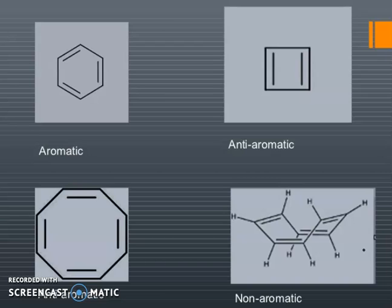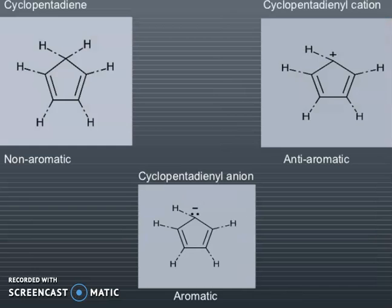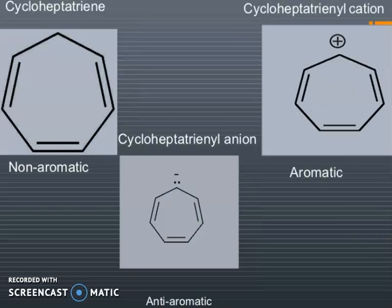Now, you can see here aromatic, anti-aromatic, and non-aromatic examples. You can see cyclopentadienyl cation is anti-aromatic, and cyclopentadienyl anion is aromatic. Cyclopentadienyl cation is anti-aromatic and cyclopentadienyl anion is anti-aromatic.